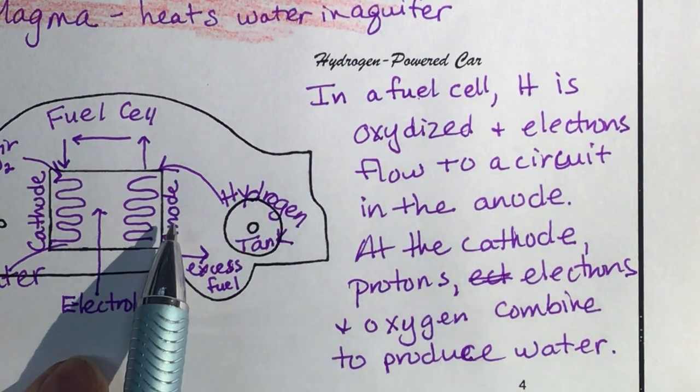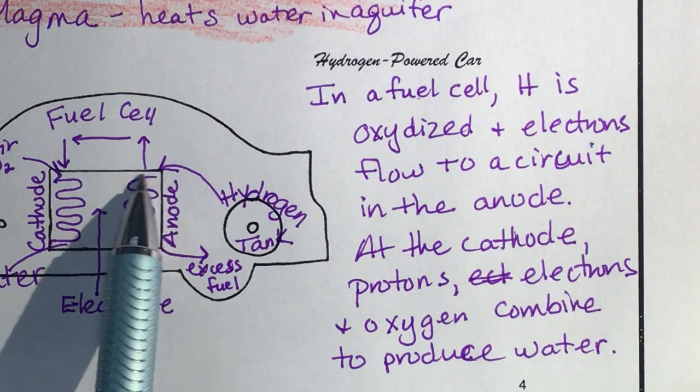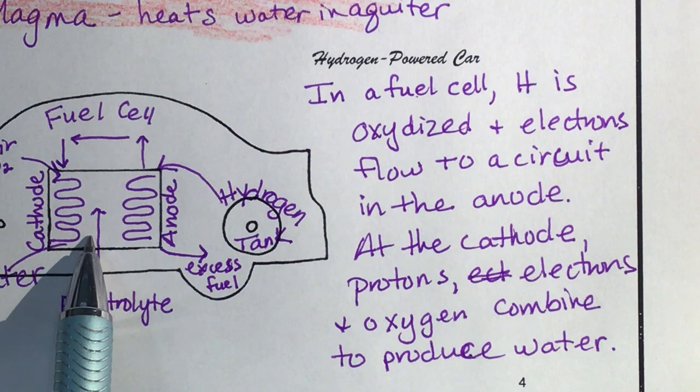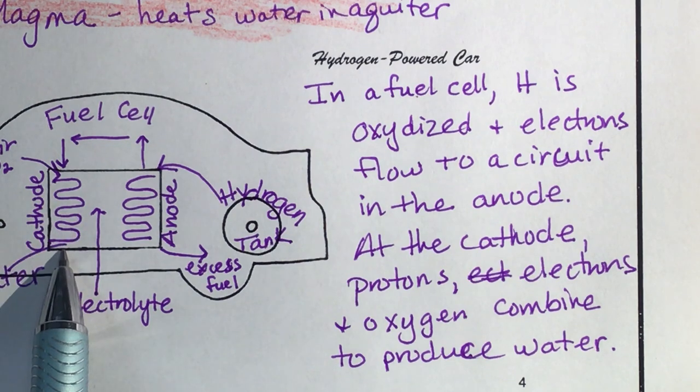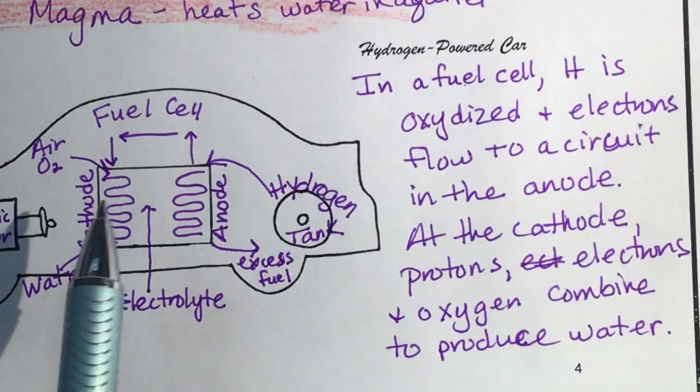hydrogen is oxidized and electrons flow in a circuit in the anode here. And then in the cathode, the electrons and oxygen combine to produce water and to power the electric motor.